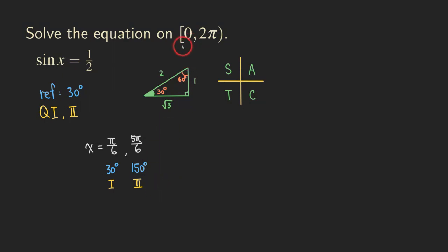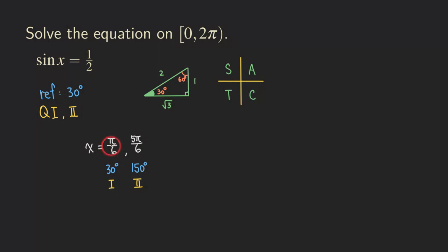We solve on 0 to 2π because we consider all angles in that interval satisfying the equation. To find all possible solutions without restrictions, we can add 360 degrees to get co-terminal angles for each solution. I'll do more complicated problems next time — please subscribe to my channel for support. Thank you, and I'll see you next time.